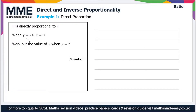Welcome to the Maths Made Easy tutorial on direct and inverse proportionality. In this video we'll go through a couple of example questions. In this first one we're dealing with direct proportion: y is directly proportional to x. When y equals 24, x equals 8 — work out the value of y when x equals 2.